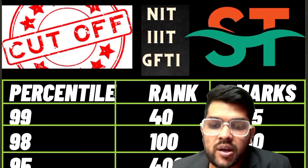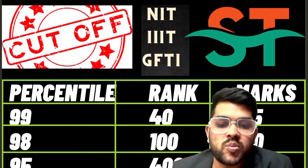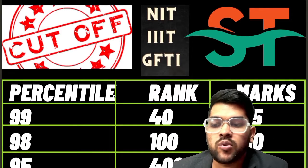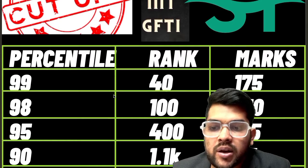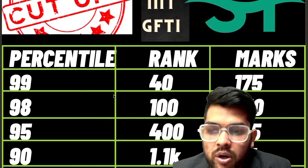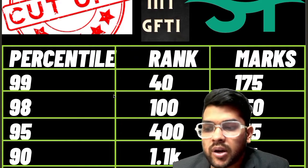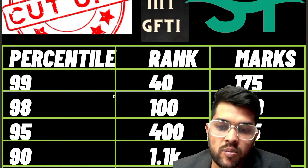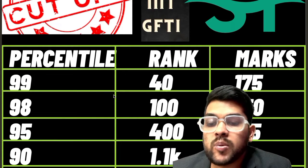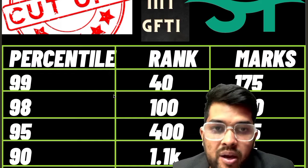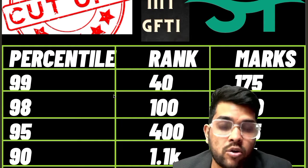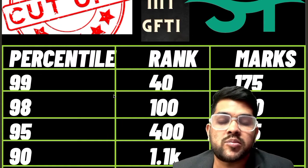For 98 percentile, your marks will be 150 and rank will be 100. For 95 percentile, marks will be 115 and rank will be 400. For 90 percentile, 84 marks are required and rank will be 1,100. This data has been prepared based on lots of experience.